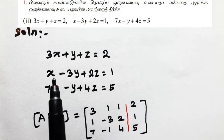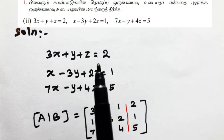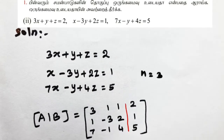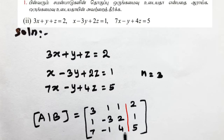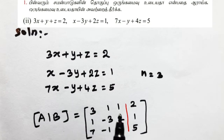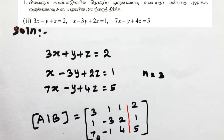We have unknown variables X, Y, Z — three variables. The first step is to form the augmented matrix. We are going to discuss the rank method using constant values B, giving us the augmented matrix [A|B].